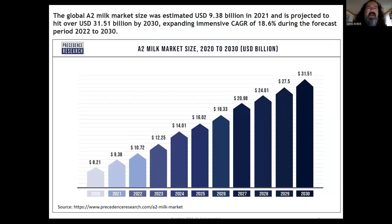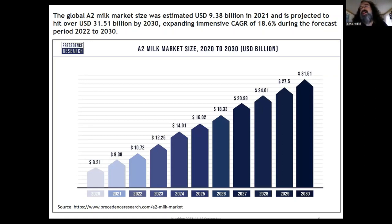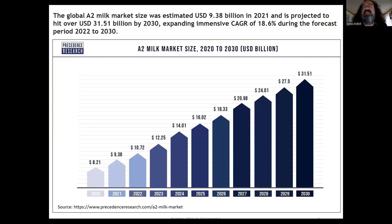From the beginning, I want to show you the market size, because this is not only about human health — it is also a very huge market. From expectations, it is predicted that by 2030 it will rise distinctly to more than 30 billion US dollars. And it is not only about selling milk — it is about selling cows, breeders, sperm, and everything else. It is a very huge market.